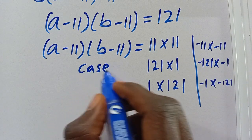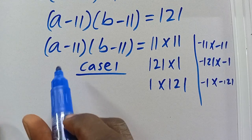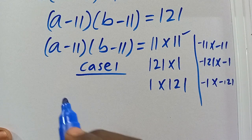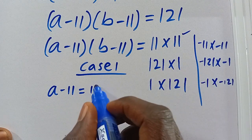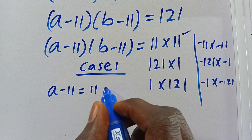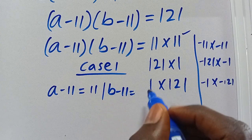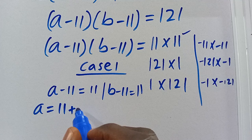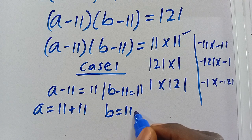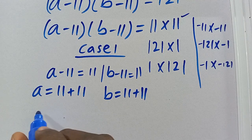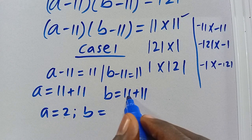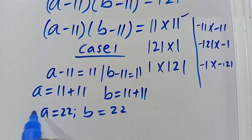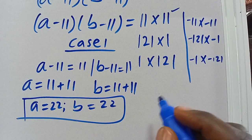Case 1: (A minus 11)(B minus 11) = 11 times 11. This implies A minus 11 equals 11, so A equals 22, and B minus 11 equals 11, so B equals 22. So the first solution is A equals 22 and B equals 22.